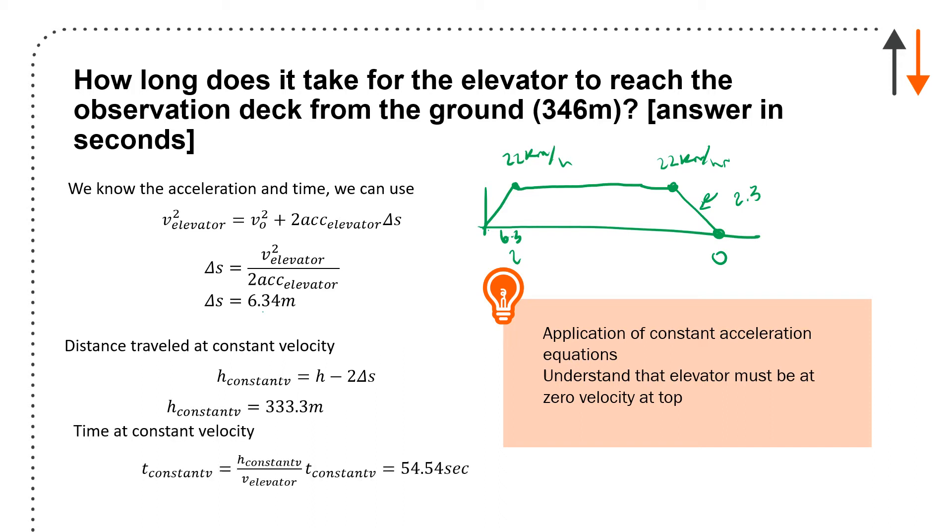So 6.3 meters at either end, and the remaining distance is 333 meters. The time at constant velocity is 54.4 seconds. Total time is the sum of all three phases: 58.69 seconds. We want you to know how to apply the constant acceleration equation.